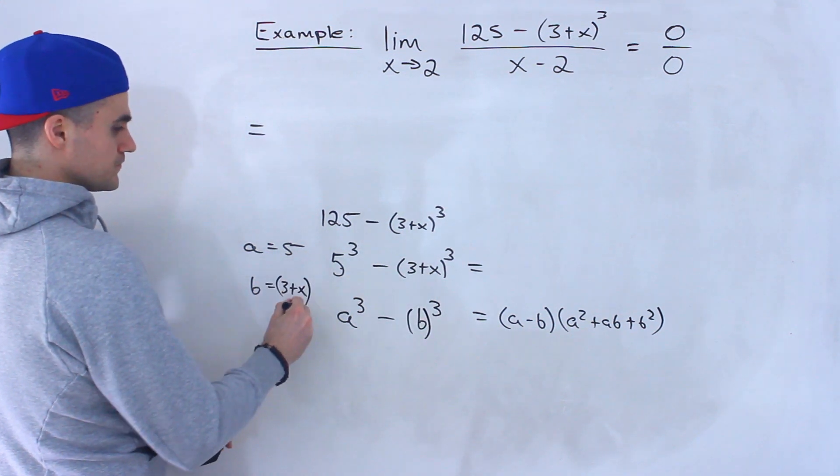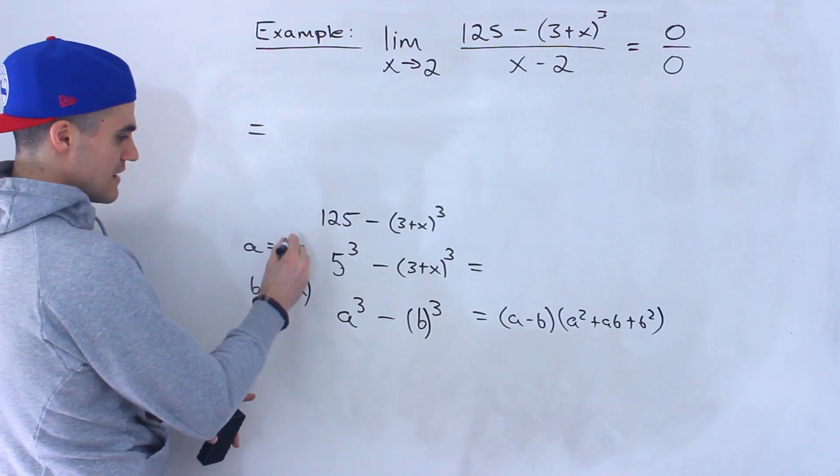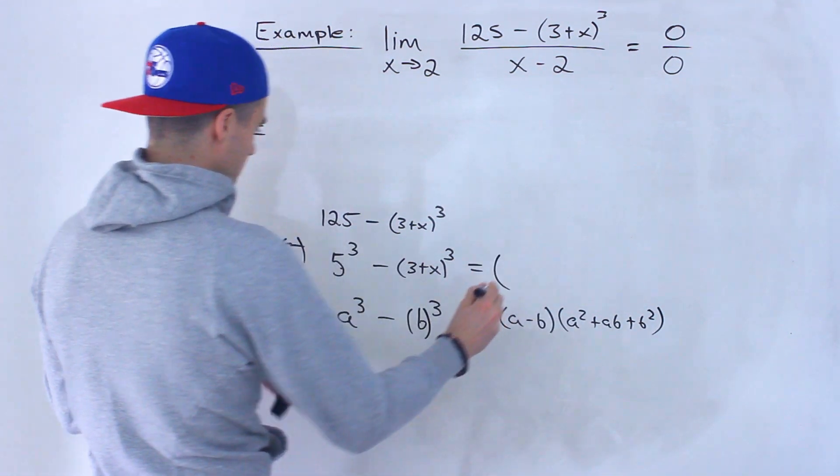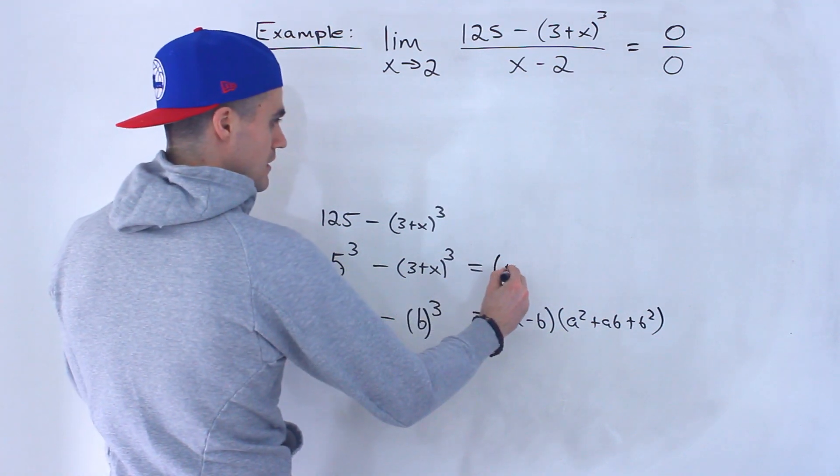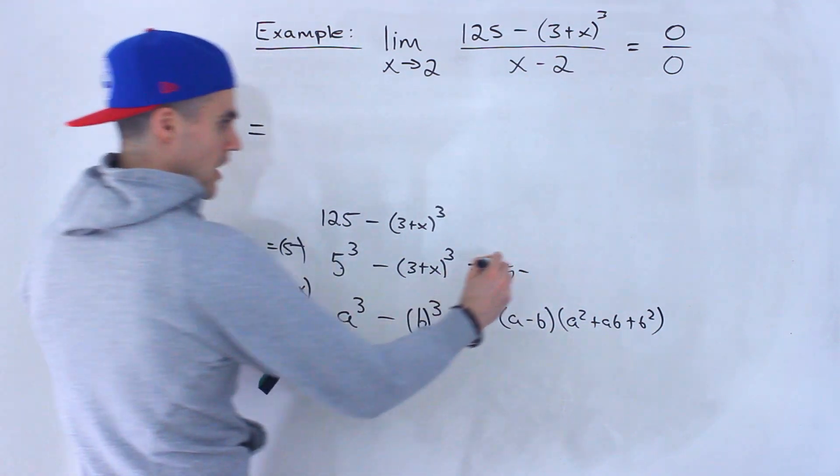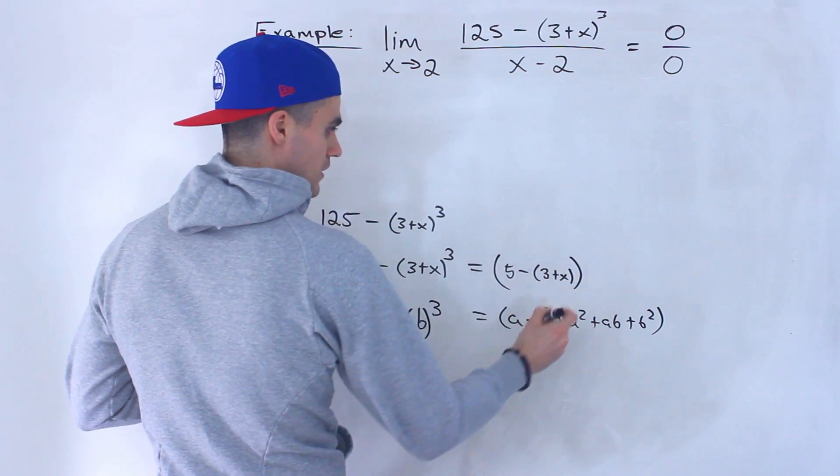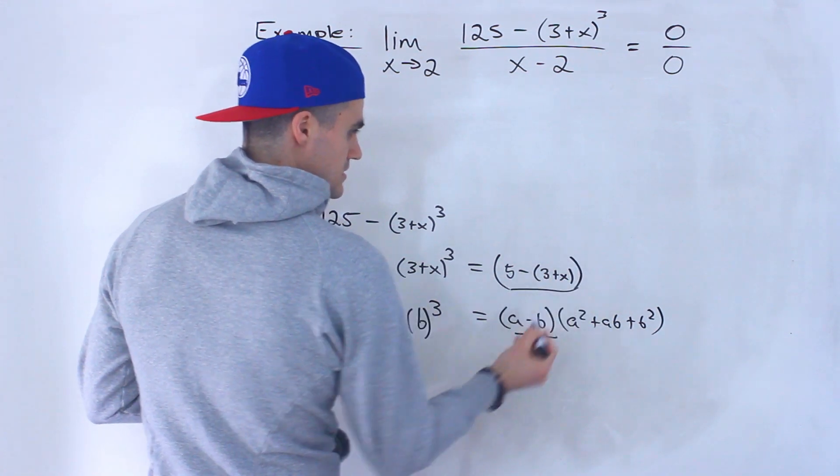is we could plug in this a value and this b value into this formula and watch what's going to happen. So we're going to have 5 minus in brackets (3 plus x) minus the b value. So this and this are the same.